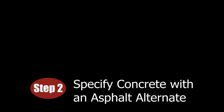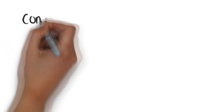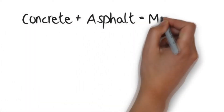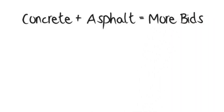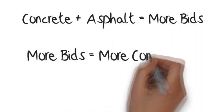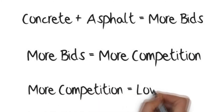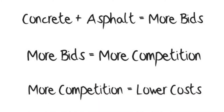Step 2: Specify concrete with an asphalt alternate. By specifying concrete as the default with an asphalt alternate, you will encourage more bids. More bids means more competition. More competition means lower costs. We ask for the concrete as the default because asphalt bids will come no matter what. When concrete is buried in the plan, it is our experience that it is often overlooked.